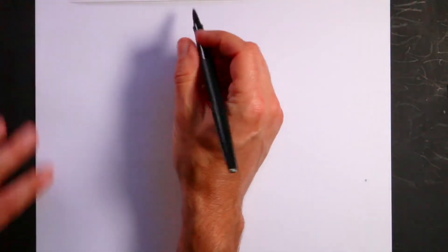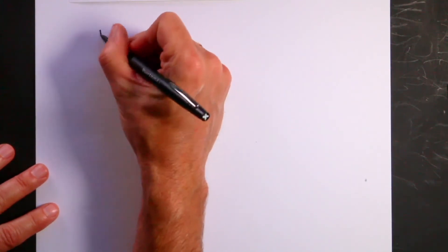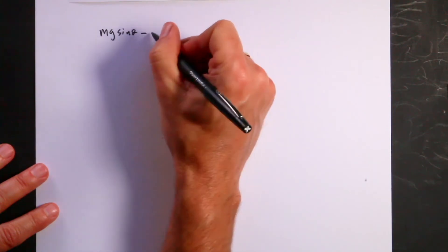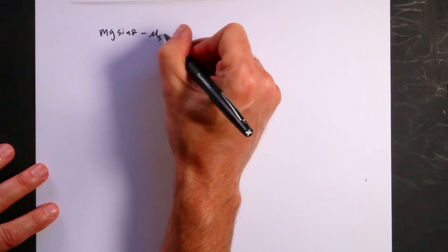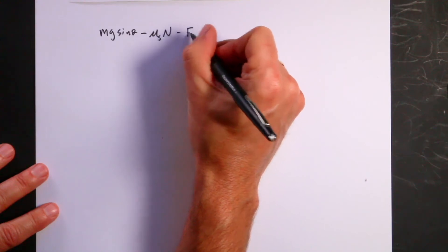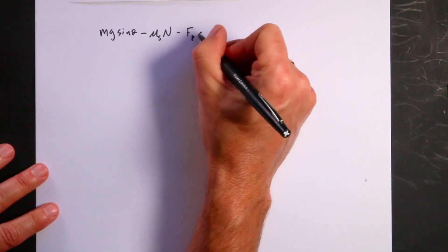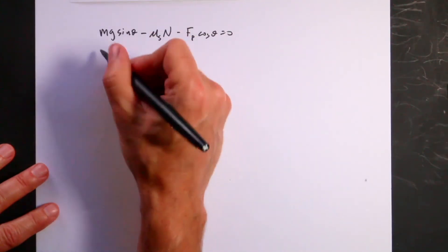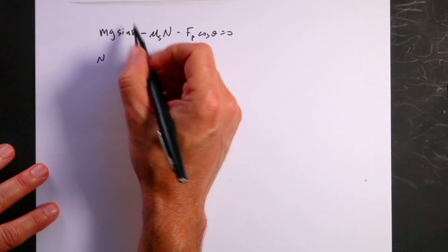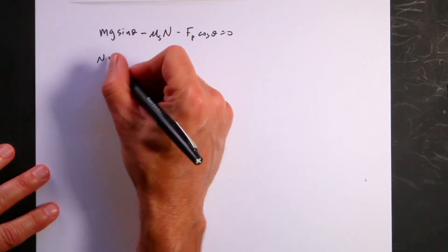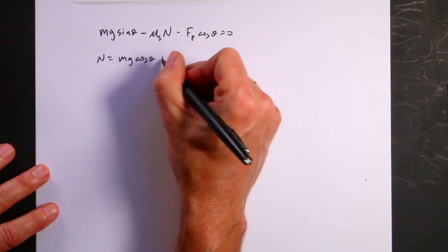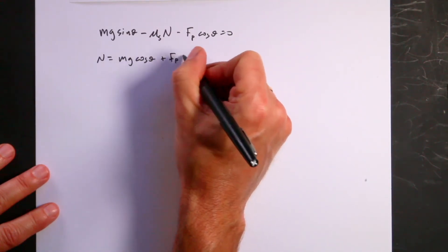So let's do that. Let's switch to another piece of paper. I'm going to substitute that in. So this is my x equation: mg sine theta minus the friction force, which is going to be minus mu s N, minus Fp cosine theta equals zero. And remember, I want to solve for Fp. And then the other equation becomes, I'm going to solve the second equation, the y equation, for N. So I get N equals mg cosine theta plus Fp sine theta.